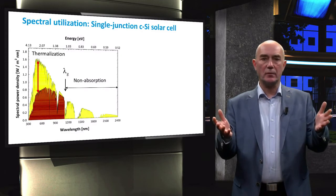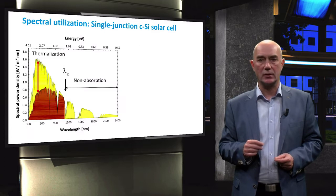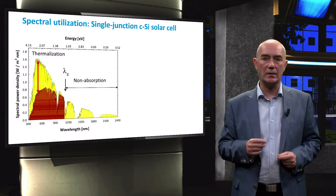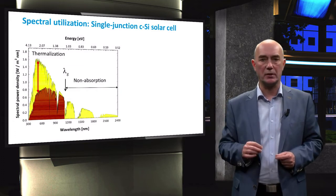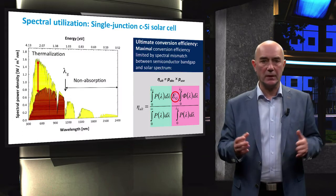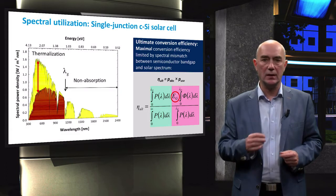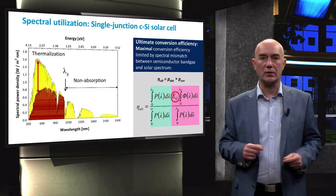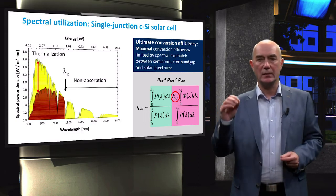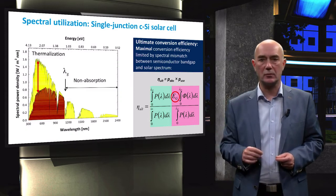Much of the energy in the short wavelength region is lost due to thermal relaxation. Part of the spectrum, the long wavelength region, is not utilized due to non-absorption. The fraction of AM1.5 spectrum that can be converted by a solar cell into electricity is defined as the ultimate conversion efficiency. This efficiency does not take the additional optical and collection losses into account.